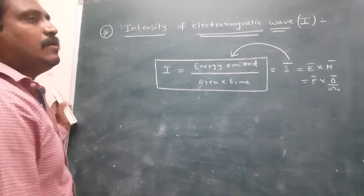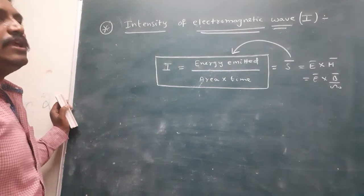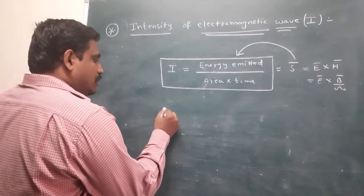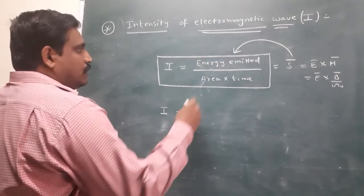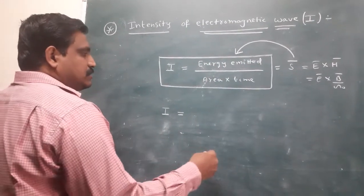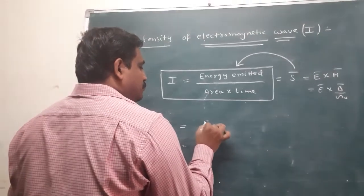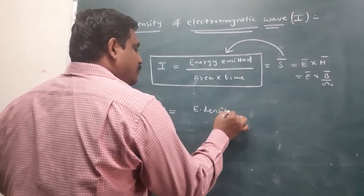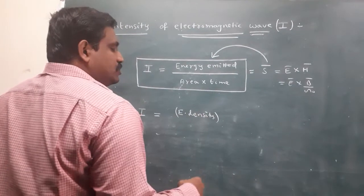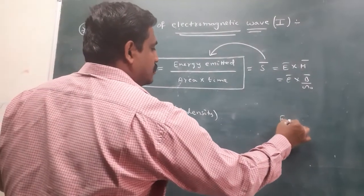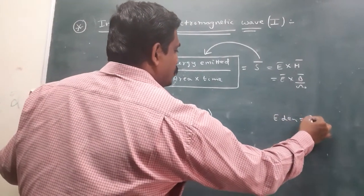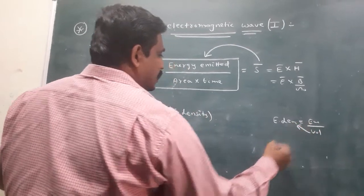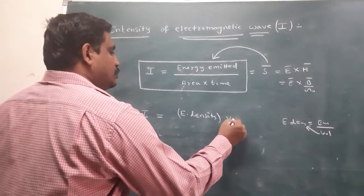Energy emitted per unit area per unit time. Here, energy can be written using energy density. Energy density means energy by volume, so energy equals energy density into volume.